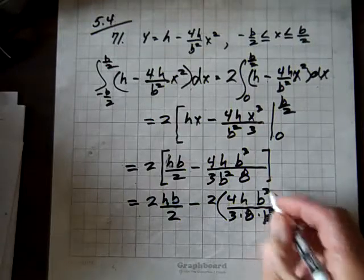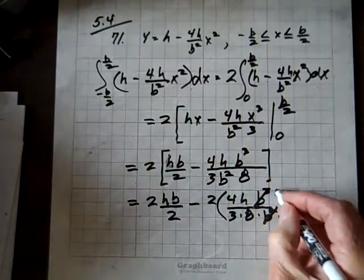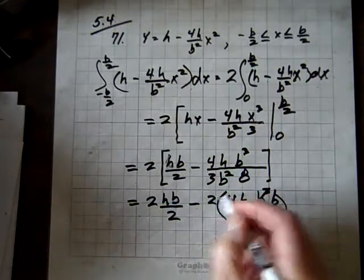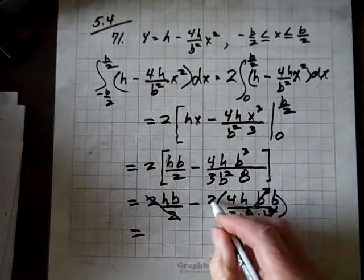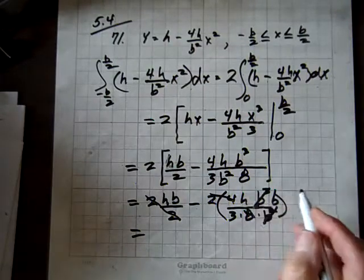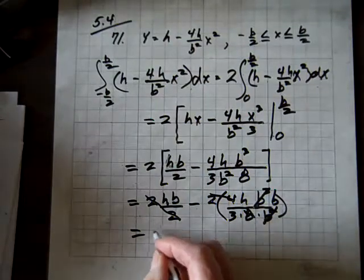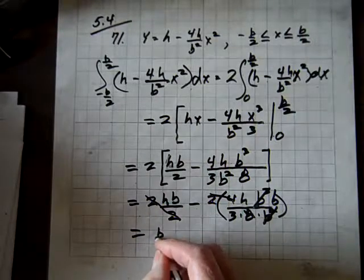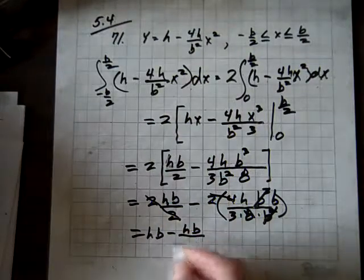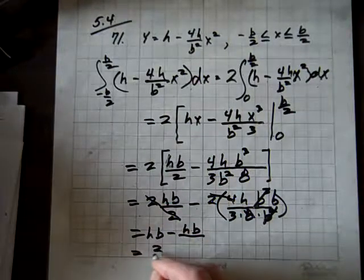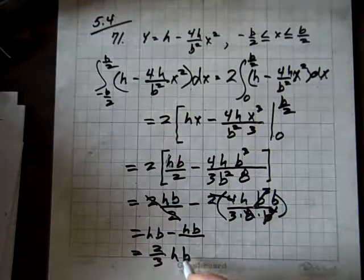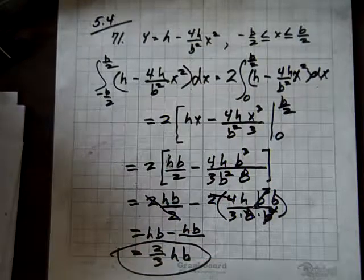And notice b squared goes into b cubed b times. And these 2's divide out, and by the way, 2 times 4 is 8, and the 8's divide out, and we're left with hb over 3. So we have hb minus a third of hb, and that equals 2 thirds of hb, height times base, which is just what Archimedes predicted.